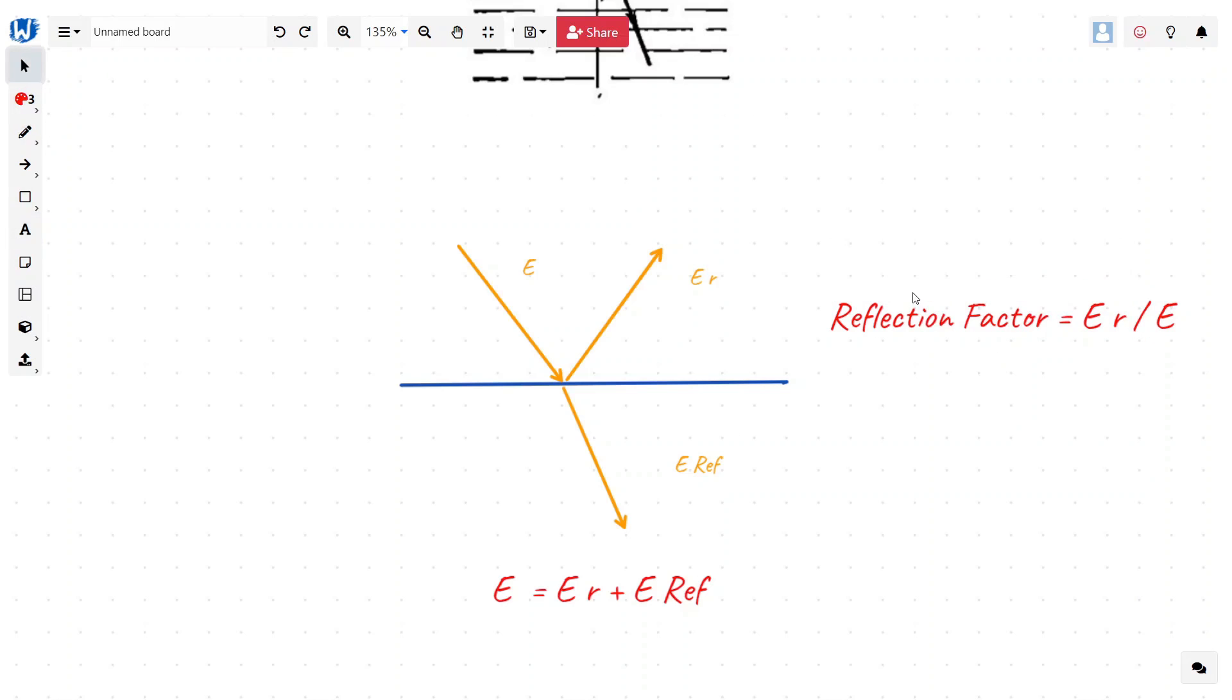A good reflector, which means like metal, etc., will have higher reflection factor. Now, the reflection factor depends on structure of the surface, the composition of the radiation itself, the angle of incidence, and many other factors.